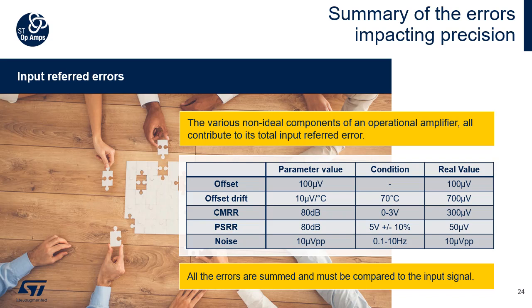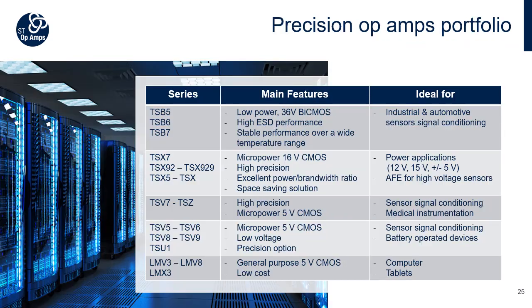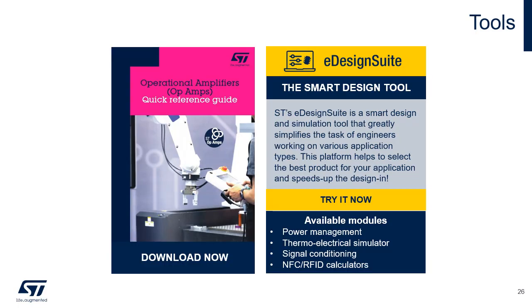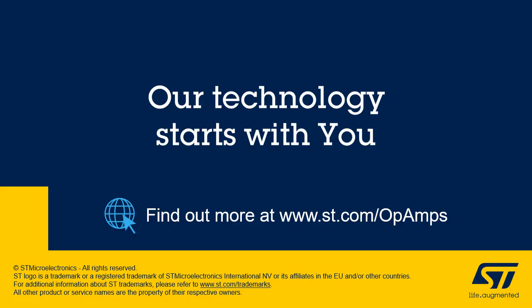The TSZ121, which is a chopper op-amp, shows very good characteristics regarding all five parameters. In this slide, you will find the precision op-amps portfolio with the main features of each series and the ideal applicability of each one. Here are some tools that will be useful to continue learning about operational amplifiers. Don't miss the opportunity to design and perform simulations with our platform eDesign Suite. You will find the links to access the different tools below in the video description. Thank you for watching this video. For more information, visit www.st.com/op-amp.